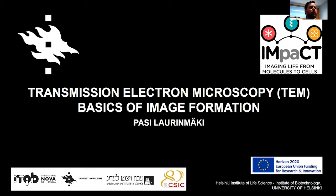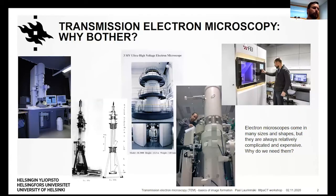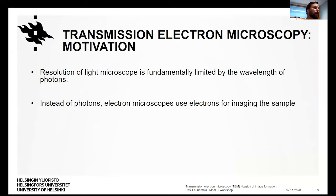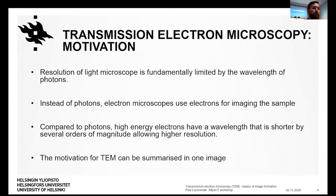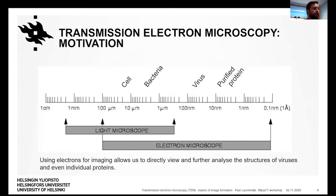I would like to start the talk with motivation. Electron microscopes come in many sizes and shapes, but they are always relatively complicated and expensive. Why do we need them? The resolution of a traditional light microscope is fundamentally limited by the wavelength of photons. In electron microscopes, instead of photons, we use electrons for imaging the sample. Compared to photons, high energy electrons have a wavelength shorter by several orders of magnitude, allowing higher resolution. The motivation for TEM can be summarized in one image — using electrons for imaging allows us to directly view and analyze structures of viruses and even individual proteins down to atomic or near-atomic resolution.